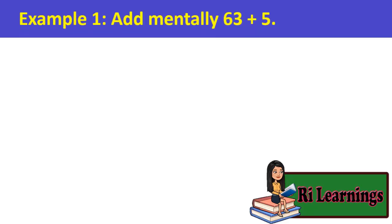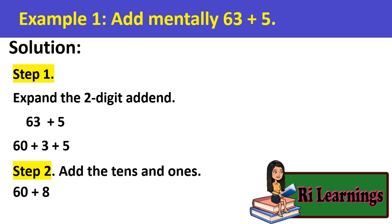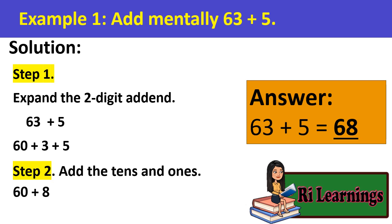Example 1: Add mentally 63 plus 5. Solution. Step 1, expand the two-digit addend. 60 plus 3 plus 5. Step 2, add the tens and ones. 60 plus 8. Answer: 68. 63 plus 5 equals 68.